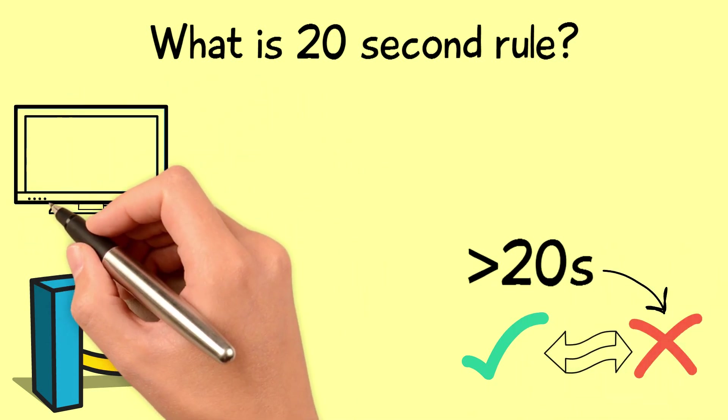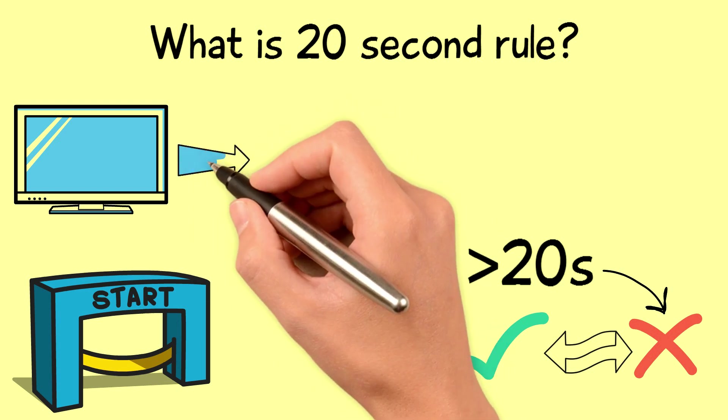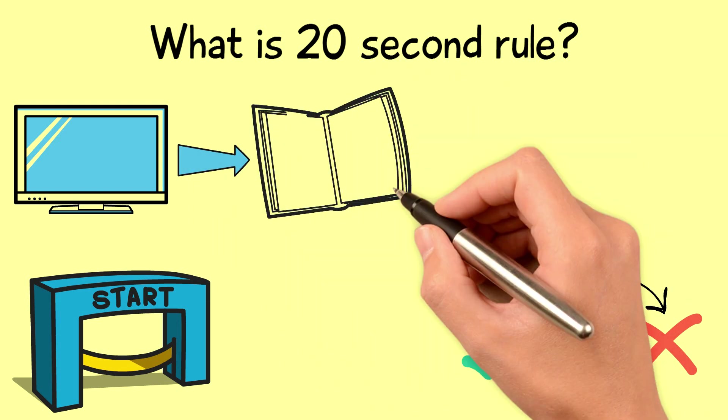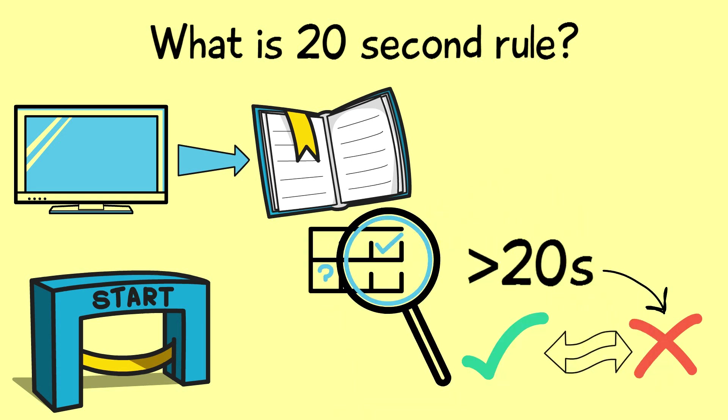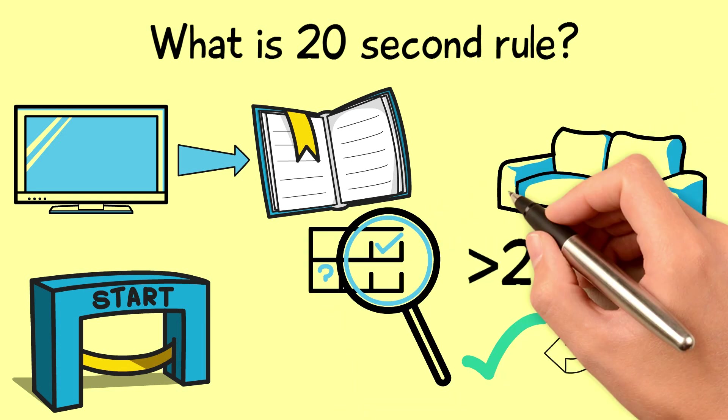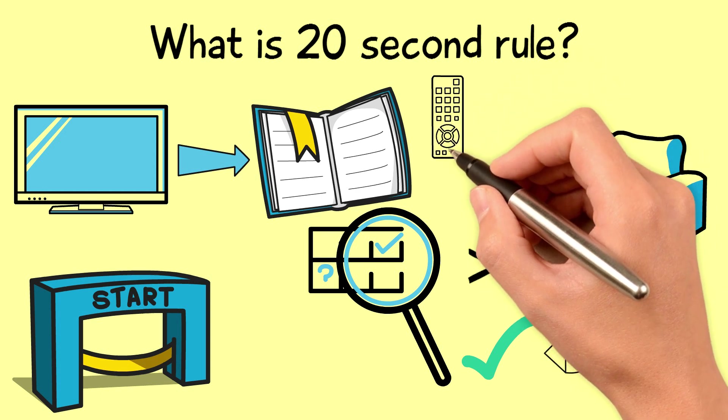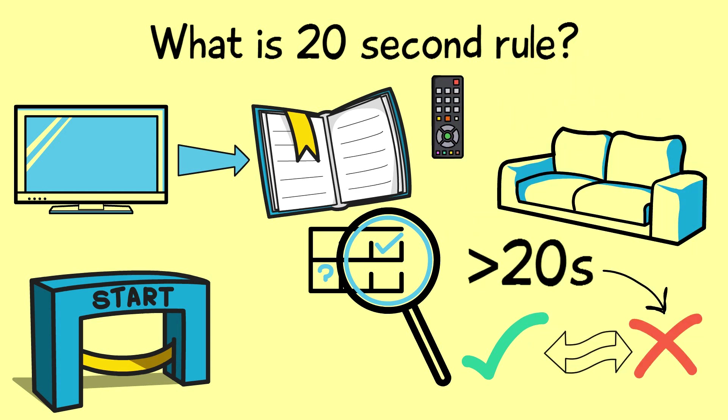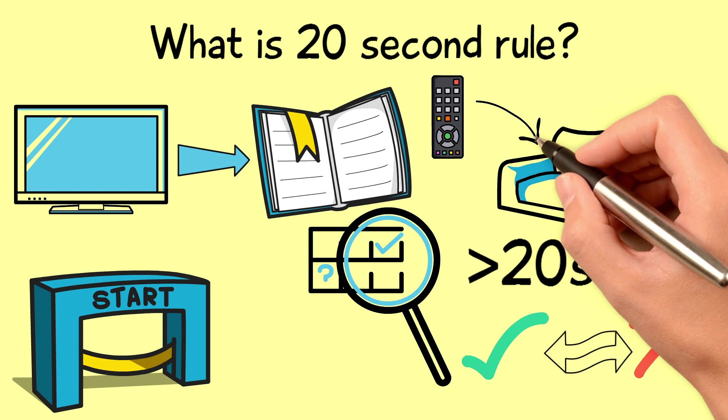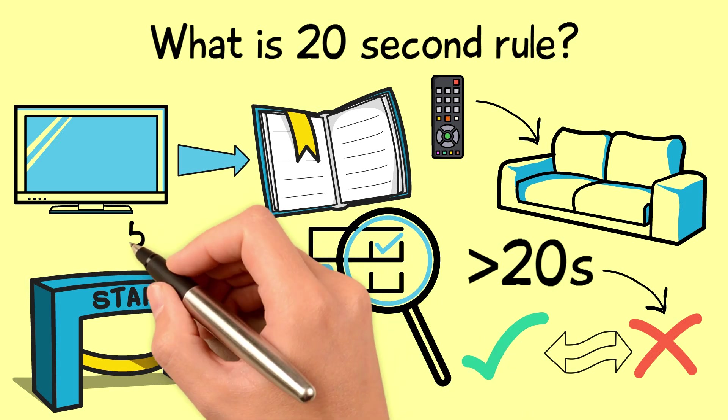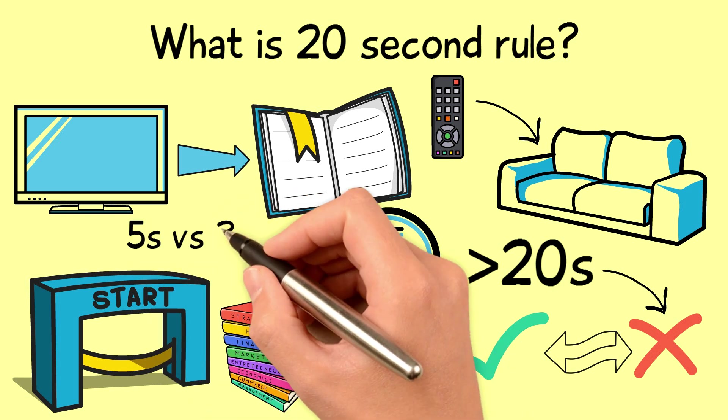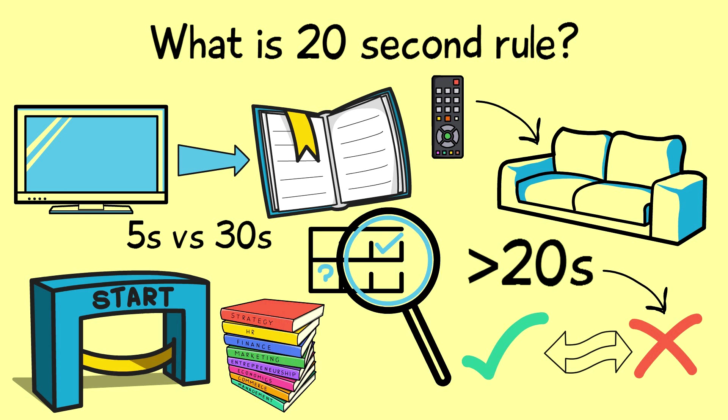For example, if you have a habit of watching TV after dinner and you want to replace it with reading a book, let's visualize this scenario in detail. After dinner, you sit on the couch and the remote is right there on the couch. So you automatically pick the remote and turn on the TV. On the other hand, the book you want to read is lying on your desk in the other room. The time required for you to start watching the TV is just a few seconds in contrast with the time required for you to start reading that book.